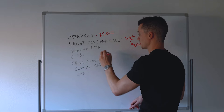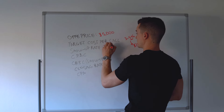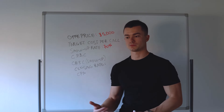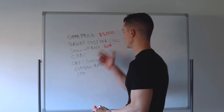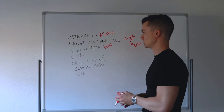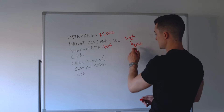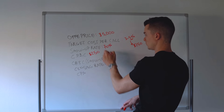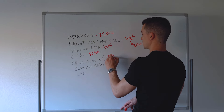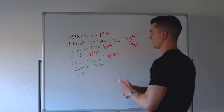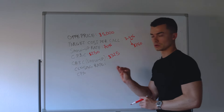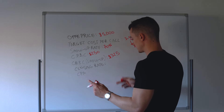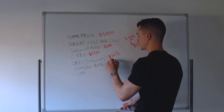That $250 is the cost for someone to book a call — not for a call that actually shows up. If you do everything well with ads, call traffic, a good sales process, a good follow-up process, and send people materials to watch beforehand, you should have roughly a 70% show-up rate. So with a $250 cost per call and a 70% show-up rate, you're paying roughly $325 for someone to actually show up to the call.